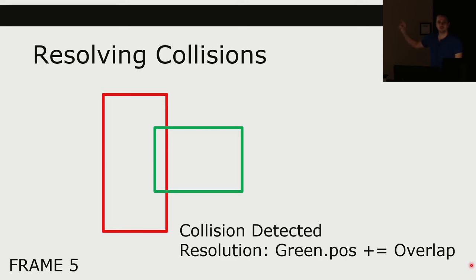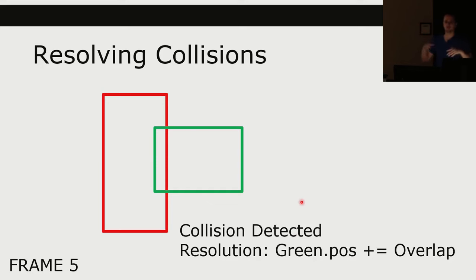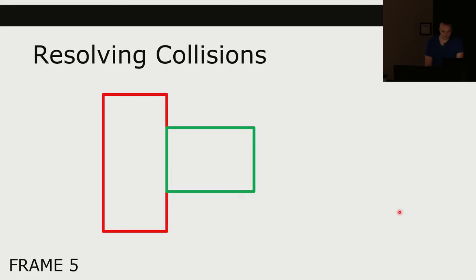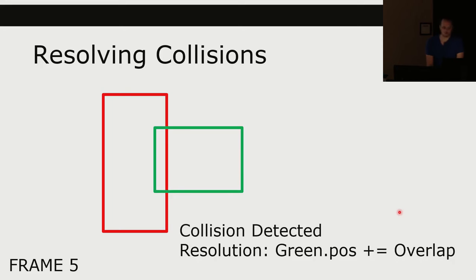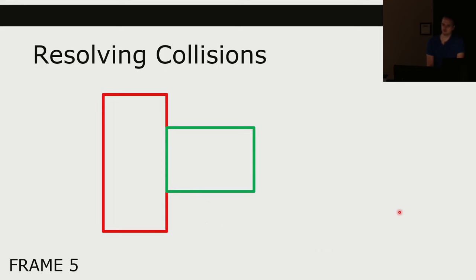One thing we can do is the simplest possible case of collision resolution: move one of the rectangles by the overlap. If I took the green one and added the overlap as the position, I'd push it out. I've detected by how much they overlapped, and I take the x component and push it back out. Frame five happens but the user doesn't see the overlap — all the user sees is the result of the collision. We fix the collision before we render it.